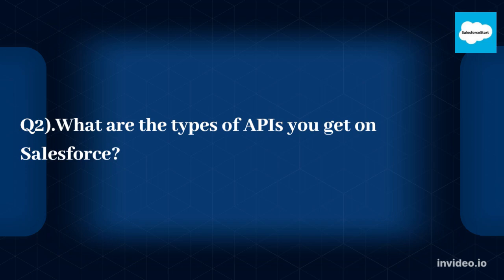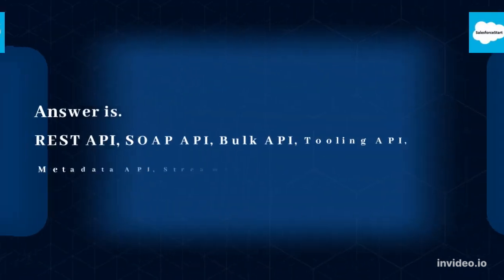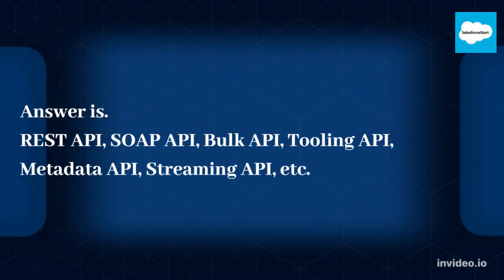Q2: What are the types of APIs you get on Salesforce? The answer includes: REST API, SOAP API, Bulk API, Tooling API, Metadata API, Streaming API, etc.